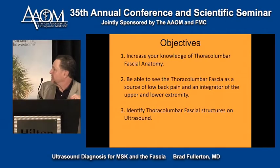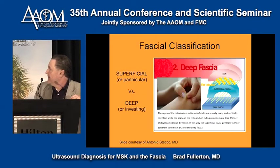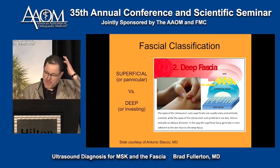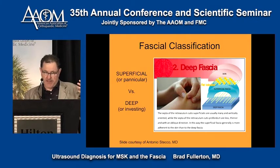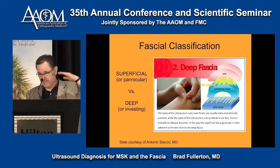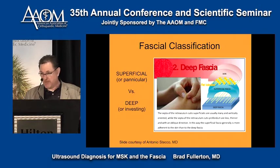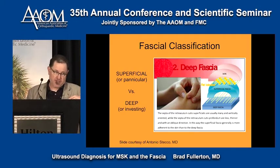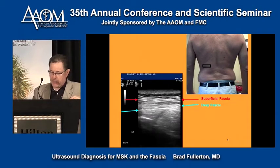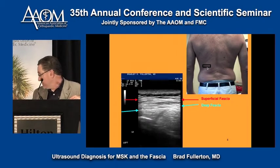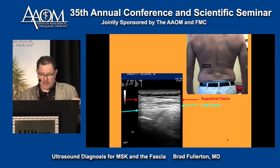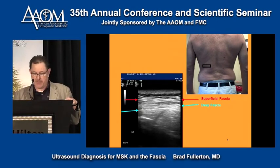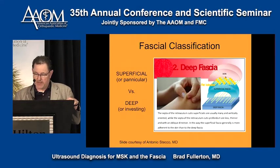It's just helpful to be aware that this region is such an integrator of body movement. Then we'll identify some of these fascial structures on ultrasound. It's important to have this basic distinction in your head: superficial fascia is the panicular fascia — the fascia layer that's in the fat. So skin, superficial fascia, then the deep fascia is basically where you start muscle — the deeper investing fascia is everything below the subcutaneous fat.